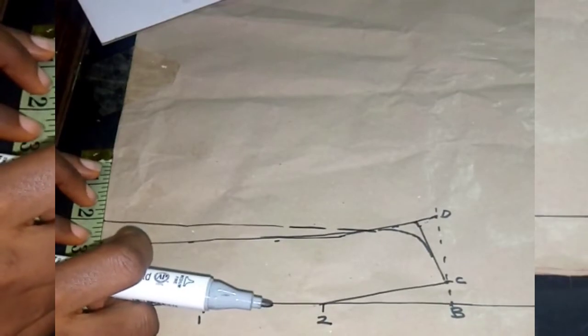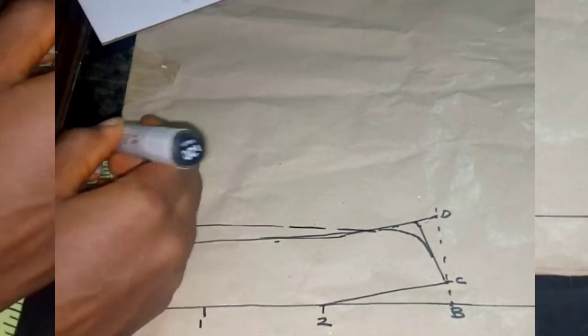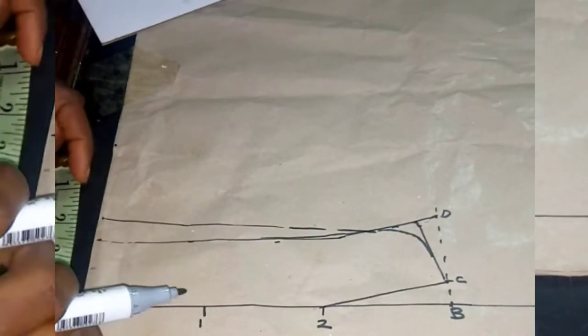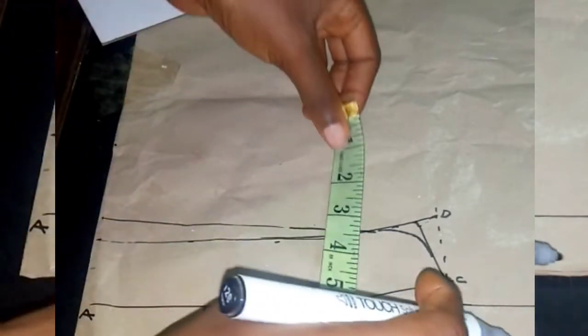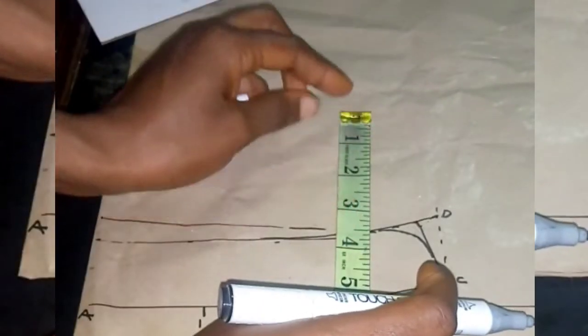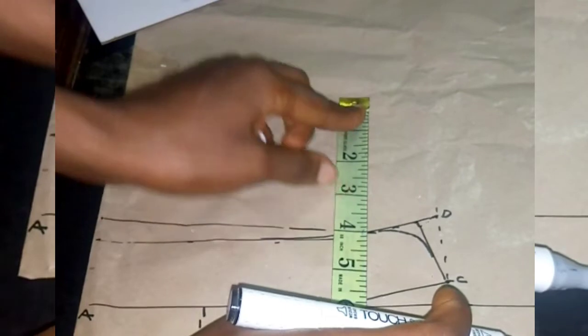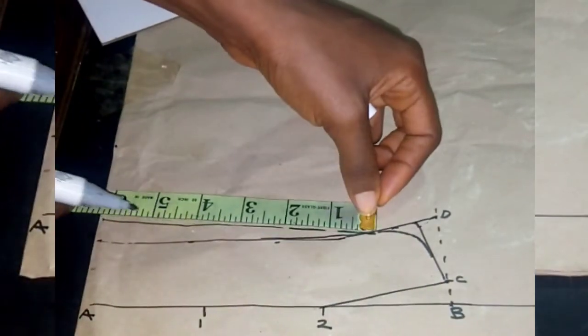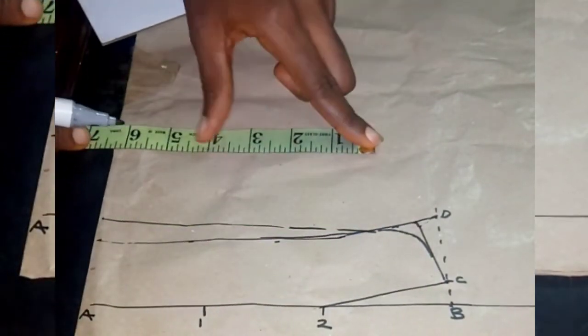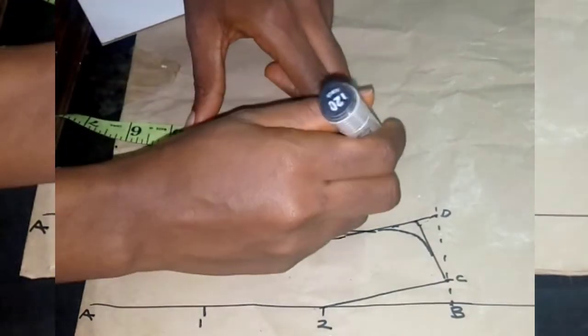From that point, I'll measure two inches because I don't want it to be too high. Measure two inches, then from that point I measure four inches. You can transfer the measurement so that it should be straight.